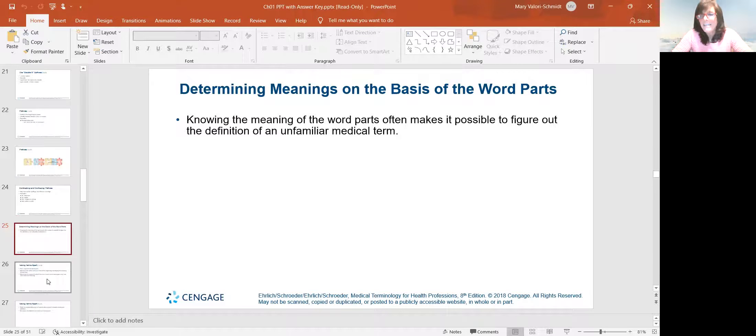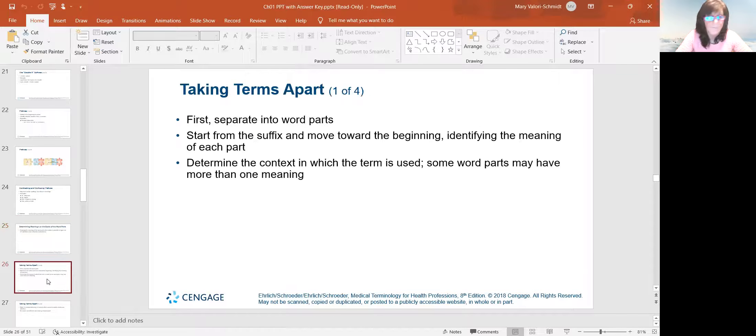So knowing the meaning of the word parts sometimes makes it possible to figure out what the definition is. If you come across a word that you don't know, sometimes you can figure it out if you stay calm, cool, and collected. What you always have to do is separate the word. Start with the suffix and then try to identify what does the suffix mean. So if you see, for example, anuria. A or an as a prefix means without. So you know it's without urea. What do you think anuria means? No urine.